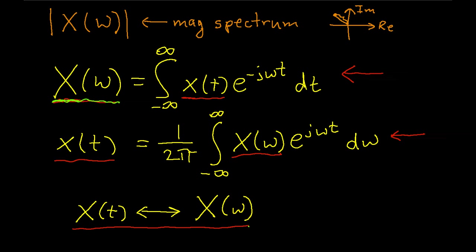We will also define what we call the phase spectrum. This is the angle that the complex number makes with the real axis. So in this particular case, if I have a complex number that's out here, the angle that it makes with the real axis would be the phase.